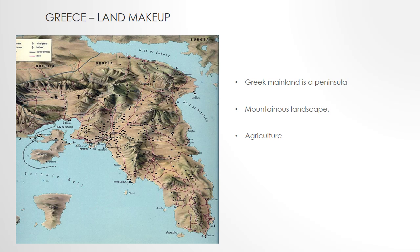Greece's land make-up: the Greek mainland was a peninsula that sticks out into the Mediterranean Sea. The southern tip is also a second peninsula, called the Peloponnese. Greece includes thousands of islands and has mountains that cover 70-80% of it. This kind of divides the land into different regions. It's a mountainous landscape with a lack of rivers, which made transportation harder on Greeks and made it difficult to unite Greece under a single government.